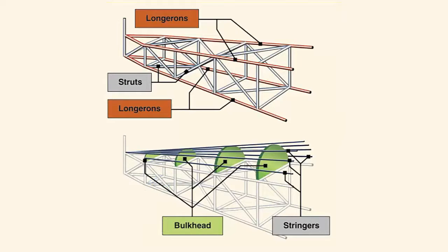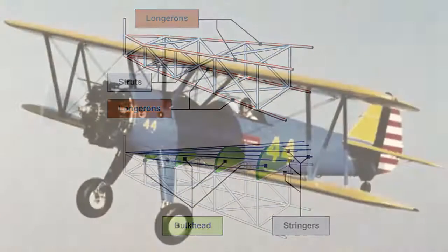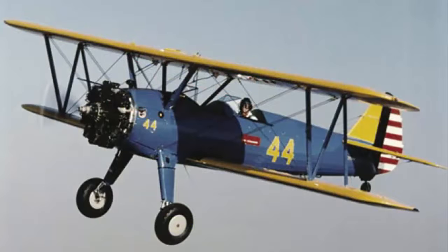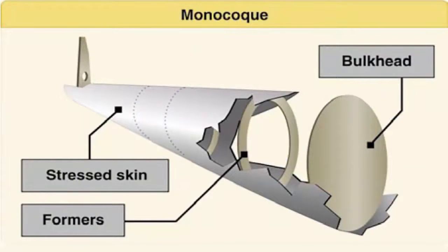As technology progressed, aircraft designers began to enclose the truss members to streamline the airplane and improve its performance. This was originally accomplished with cloth fabric and then evolved to lightweight metals such as aluminum. In some cases, the outside skin can support all or a major portion of the flight loads. Most modern aircraft use a form of this stressed skin structure known as monocoque or semi-monocoque construction.